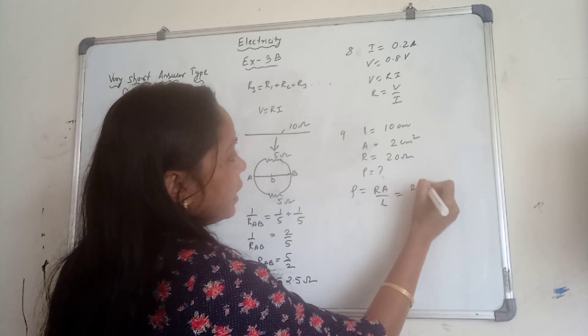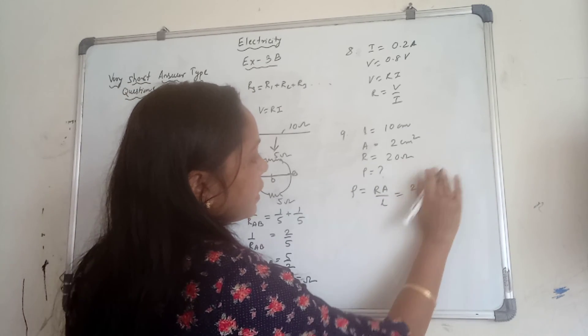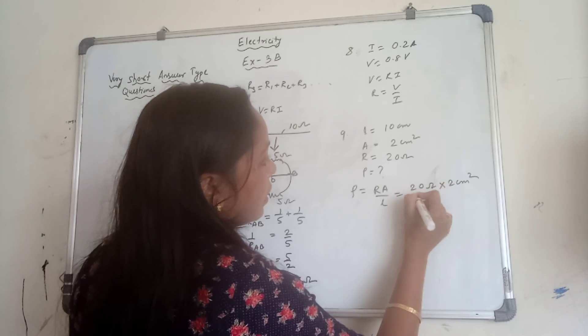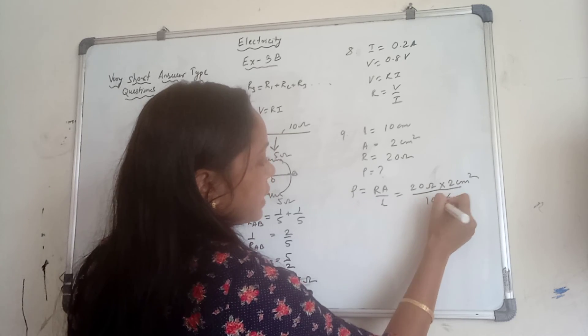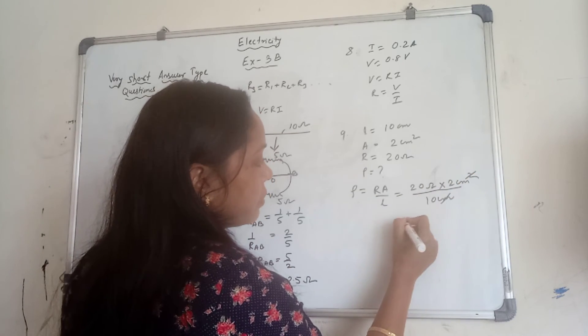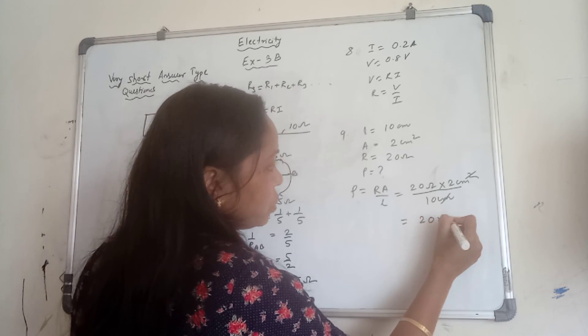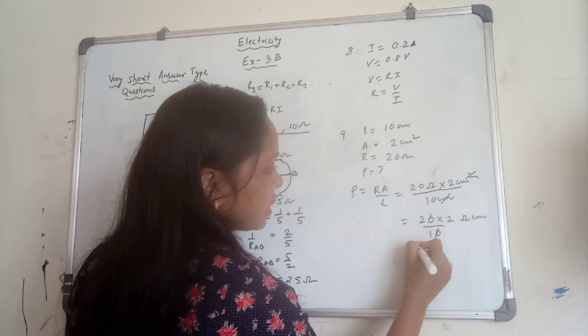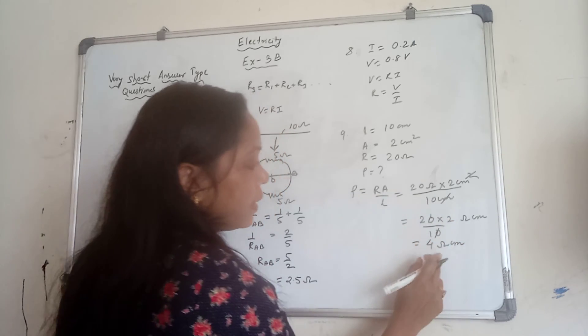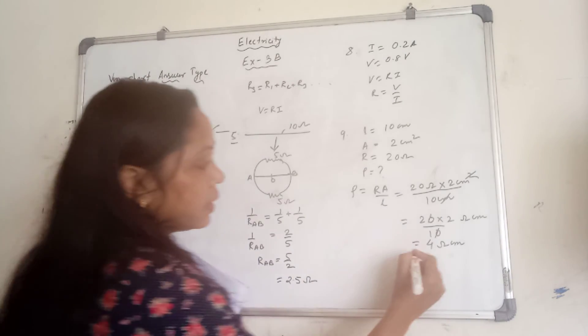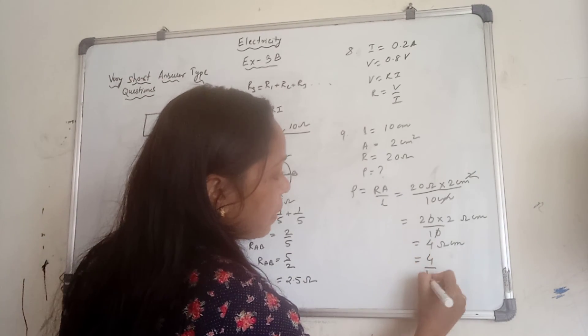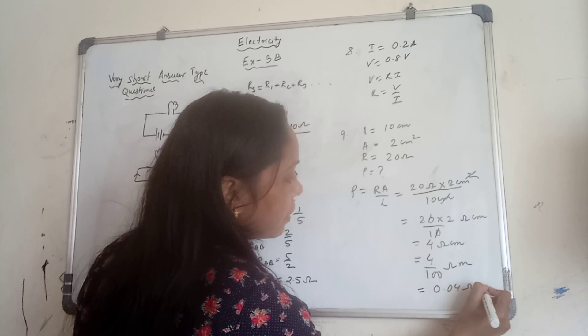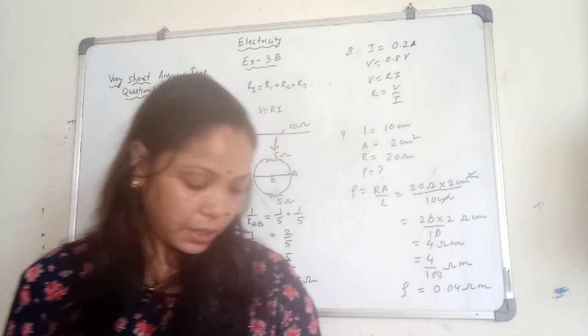You have to find the rho. Now, we know that rho is equal, rho means resistivity. It is RA by L. So, R is given as 20. A is given as 20 Ohm. A is given as 2 cm square. And L is given as 10 cm. So, cm, cm get cancelled. This is 20 into 2 Ohm cm by 10. So cancel this one. This one will be 4 Ohm cm. Now, convert this cm into meter. Divide by 100. So, 4 by 100 Ohm meter. This one equals 0.04 Ohm meter is the resistivity.